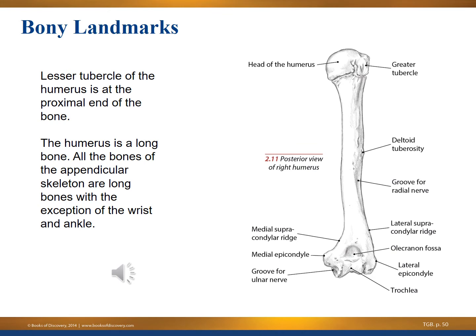The lesser tubercle is also at the proximal end of the bone. This is a posterior view of the right humerus. The humerus is a long bone — all of the bones in the appendicular skeleton are long bones, with the exception of the wrist and ankle. As a quick review: the appendicular skeleton is the exterior portion, while the axial skeleton includes the spine, thorax, and ribcage.